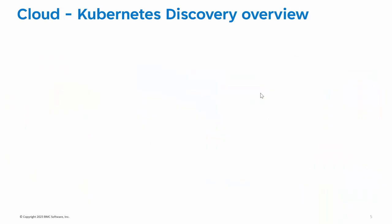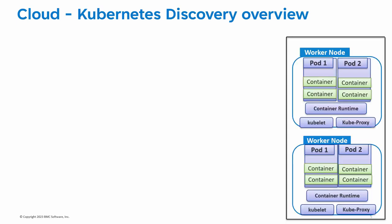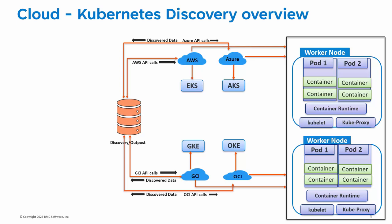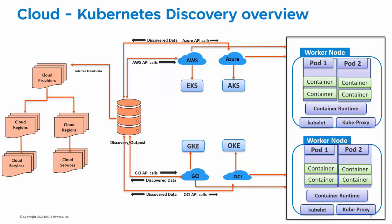Now let's talk about the scanning of Kubernetes when it is created in the cloud. Let's say you have two worker nodes managed by Kubernetes services of the cloud — for example, EKS from AWS, AKS from Azure, GKE from GCP and OKE from OCI. First, let's say you are scanning the cloud using a created cloud credential. Discovery Appliance or Outpost runs respective cloud API requests to collect the cloud data. These data will be captured as discovered data and then Discovery infers the data and creates cloud providers, cloud regions and cloud services. With cloud scanning, Discovery will create cluster nodes and related VM nodes, but not all supported Kubernetes entities are discovered as part of cloud scanning.